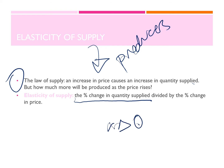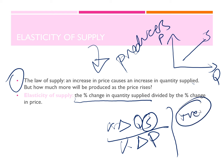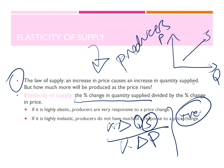It is the exact same formula as PED, but instead of quantity demanded we use quantity supplied. Remember in PED we said our answer would always be negative. Here, because the supply curve is always upward sloping — a positive slope — my answer will always be positive and I will keep it as is. If it is highly elastic, producers are very responsive to a price change and the answer will be greater than one. If it is inelastic, the answer would be less than one and producers do not have much of a response to the change in price.